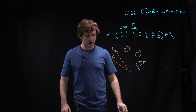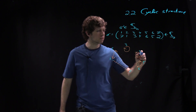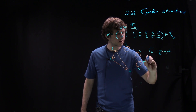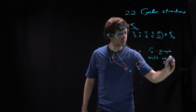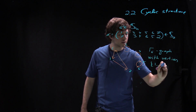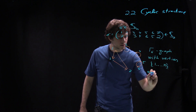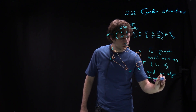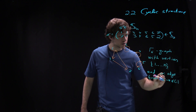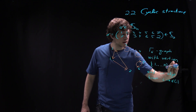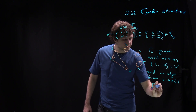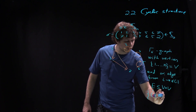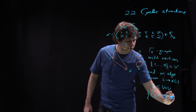We get a graph. Let me denote this graph gamma of sigma. This is a graph with vertices 1 to n and an oriented edge from i to sigma of i.